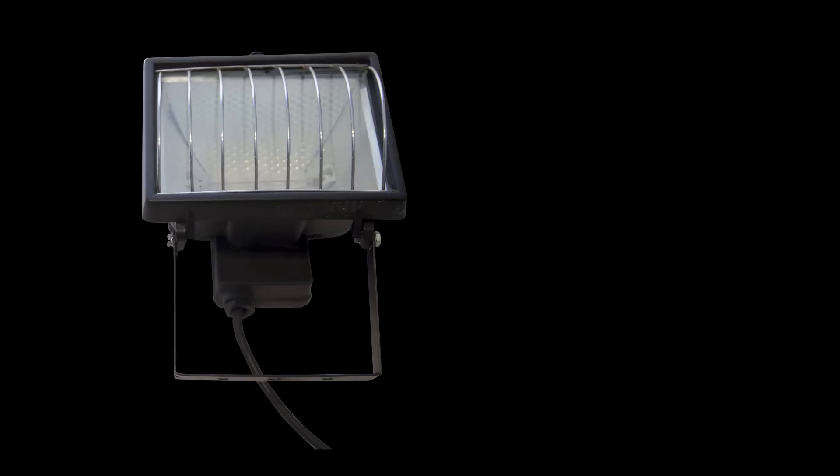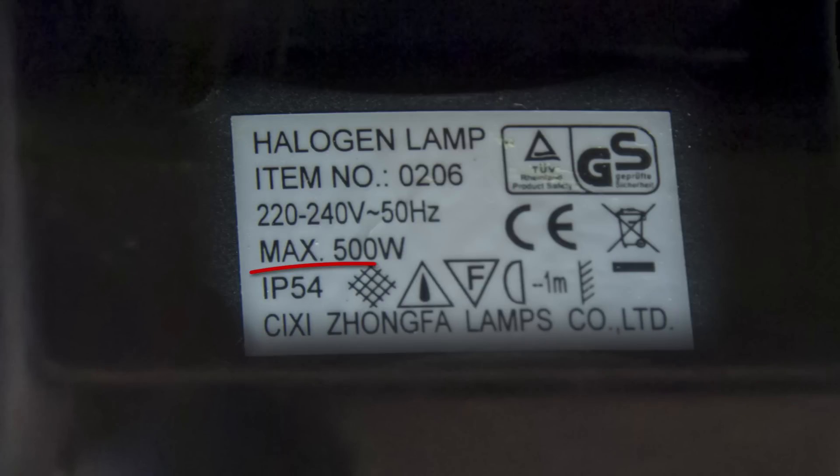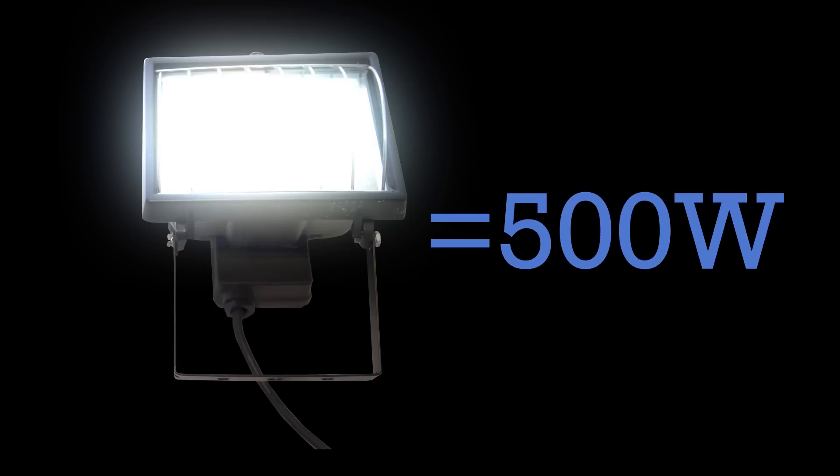But our third example is a really powerful halogen, and this one will use up to 500 watts. If you have several of these turned on simultaneously, you might want to check your fuse size. So let's use the wattage from this halogen in our example calculation.